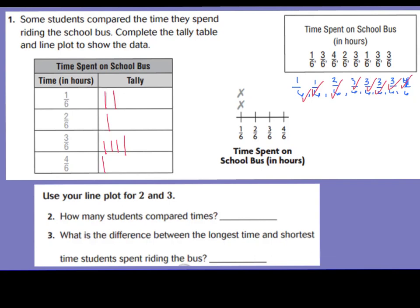Now that we have a tally chart, it'll be easy to make our X's for our line plot. As I count up, I have two students for 1/6, so I'm going to darken those in. One student rode the bus for 2/6 of an hour. Four students rode the bus for 3/6 of an hour. And one student rode the bus for 4/6 of an hour. Now I can answer the questions below.